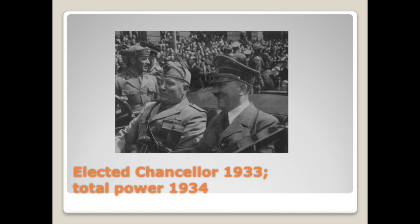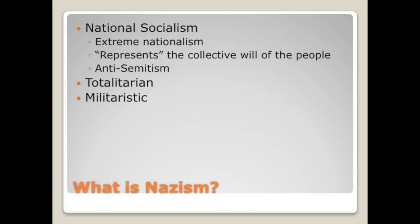Here we see Hitler and Mussolini together. Hitler was elected chancellor in 1933 and seized total power by 1934. Unlike Mussolini, we see almost no evidence of any play with modernism. Nazism stands for national socialism — an extremely nationalistic program. It is like fascism in that you have a totalitarian, militaristic government, but the idea is different because the Führer believed he represents the collective will of the people, with no such pretense in Italy.